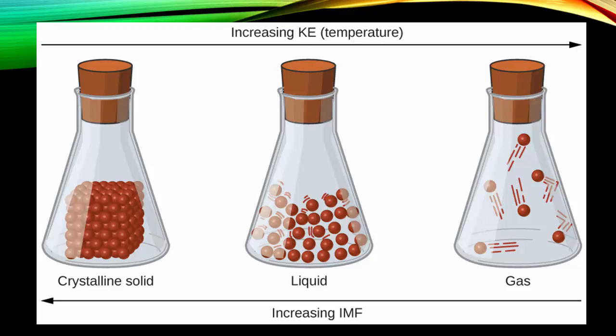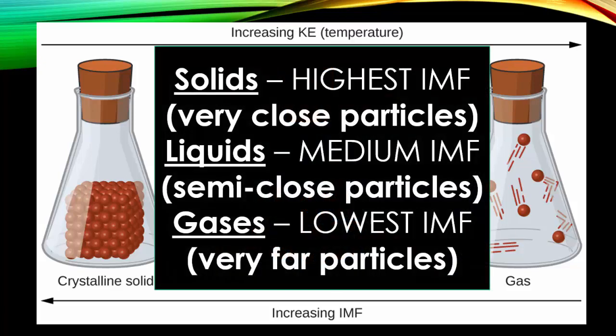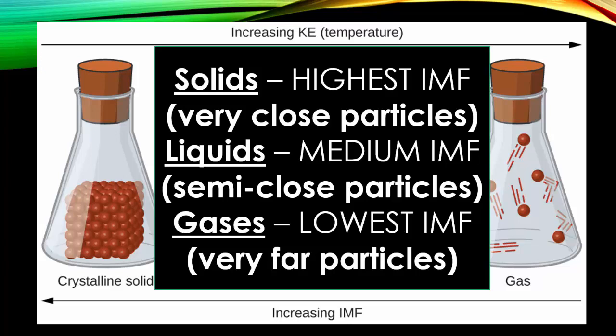But if you look on the bottom, it says that as you increase the intermolecular forces between the particles, you go backwards. You go from your gas to liquid back to your solid state. Therefore solids have the highest intermolecular forces with very close particles. While liquids have a medium intermolecular force with semi-close particles. And finally gases have the lowest intermolecular force, which means they have very far particles.